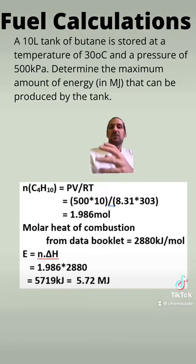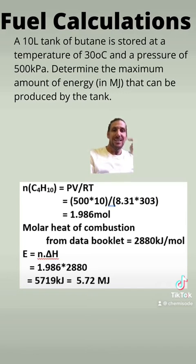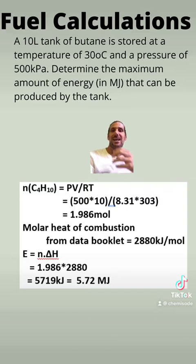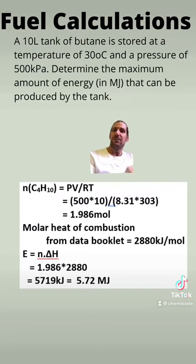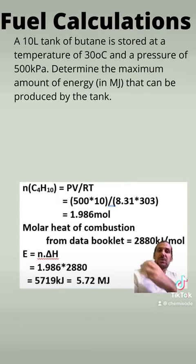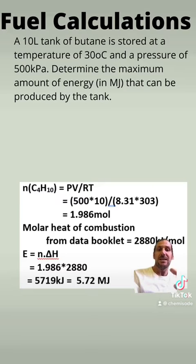The main thing with this question is knowing what is in your data booklet, and knowing that you need to use your data booklet for energy calculations. There is energy content listed in the data booklet — that is how you start a question like this. You look at your data booklet and find the energy content of butane per mole, then find your number of moles of butane. This is a pretty standard question in terms of finding out how much energy can be produced from a fuel; the main thing is knowing that you need to find the number of moles to begin with.